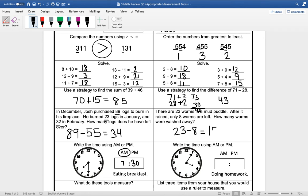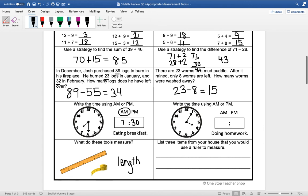Write the time using AM or PM. So our hour hand is on the 4, our minute hand is on the 1, which would be 5, so it would be 4:05. We are doing homework, so you would be doing homework at 4:05 PM. That would be in the afternoon.